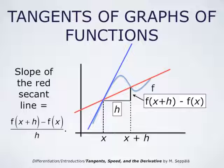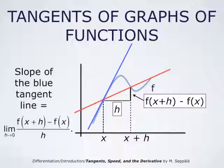So the blue tangent line is the limit of these secant lines as the right intersection point approaches the left intersection point. That is, the slope of the blue tangent line is the limit of the slope of the red secant lines as h goes to zero. So the slope is the limit as h goes to zero of f(x+h) minus f(x) divided by h.